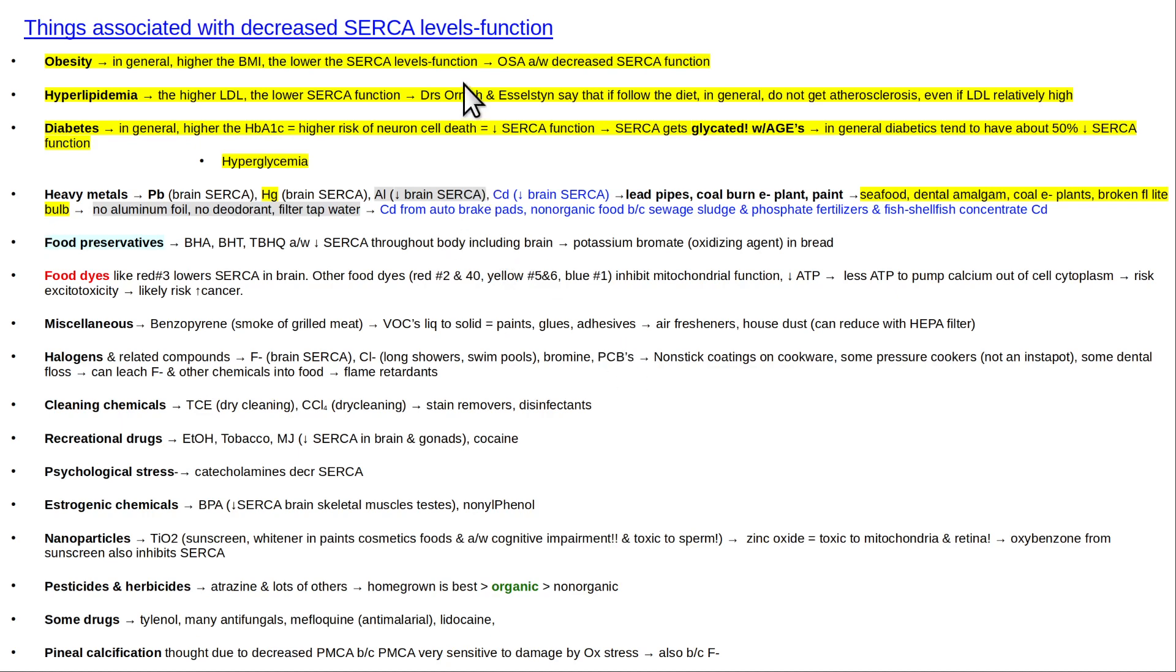Here's an example of things that lower SERCA function. SERCA is sarcoplasmic endoplasmic reticulum calcium ATPase. That's the pump to pump calcium out of the cytoplasm into the endoplasmic reticulum. Being fat, having diabetes, all these heavy metals, food preservatives, food dyes, halogens. If you look at this list closely, lots of things that inhibit mitochondria also inhibit SERCA. That's kind of one of the points I'm making. SERCA inhibitors, excitotoxins, and mitochondrial inhibitors, they're all kind of the same thing because they all eventually, one way or the other, lead to increased cytoplasm calcium.